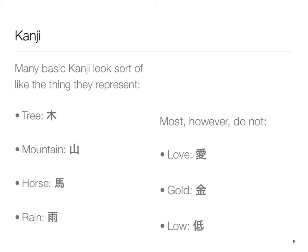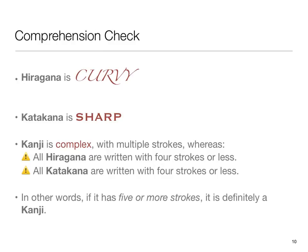Many basic kanji look sort of like the thing they represent. This character here is the one for tree — it looks a bit like a tree; you can see the branches. The kanji for mountain, the kanji for horse — there are little feet down below — and then the kanji for rain, a depiction of rain falling outside of a window. Most kanji, however, do not look anything like the concept or object that they represent. The kanji for love, for example, doesn't really suggest love. The kanji for gold or the kanji for low. Once upon a time kanji were pictures of the objects or concepts they depicted, but they have long since ventured into more abstract territory and no longer resemble the things they once did.